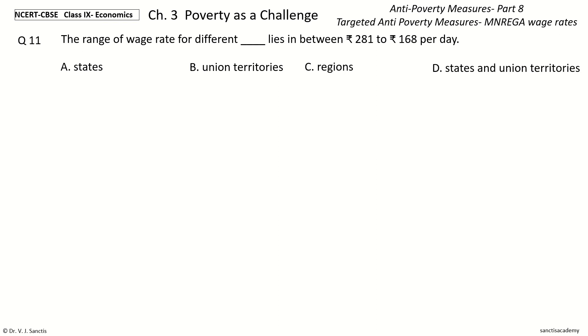Question 11: The range of wage rate for different Dash lies in between Rs. 281 to Rs. 168 per day. The options are: States, Union Territories, Regions, States and Union Territories. The answer is States and Union Territories. The range of wage rate for different States and Union Territories lies in between Rs. 281 to Rs. 168 per day.